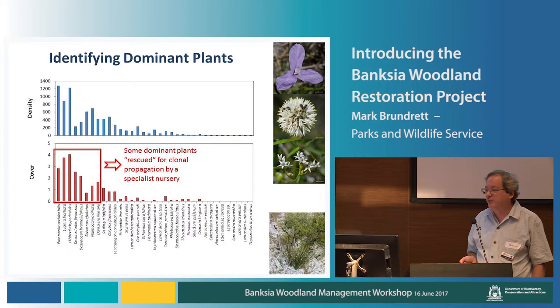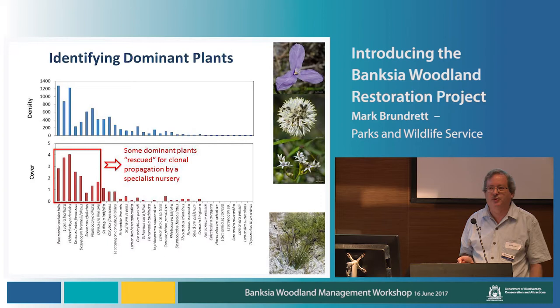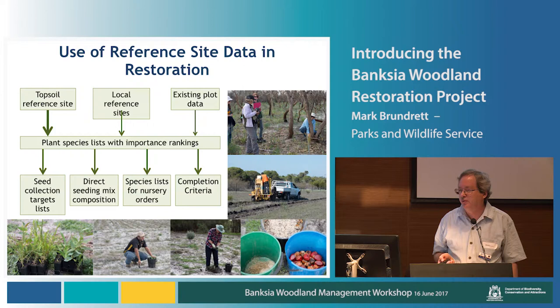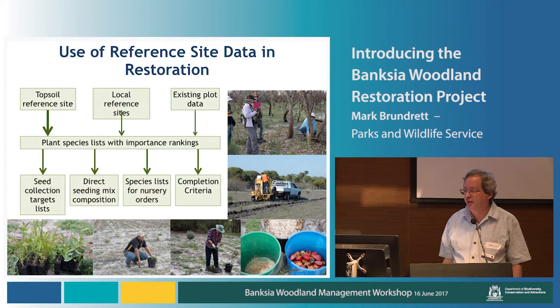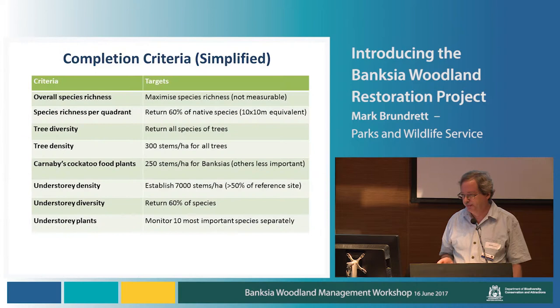It was very useful having this information because it allowed us to determine the relative importance and dominance of the plants in the banksia woodland at Jandakot Airport. This gives us some idea of what may come out of the topsoil, and we were also able to identify species that were very important in terms of dominance — those were sent to a specialist nursery to be propagated, to make sure we'd have some of them even if they don't come from seed or topsoil. This data was used to produce species lists for revegetation, which led to seed collection targets, seeding mix composition for direct seeding, and completion criteria.